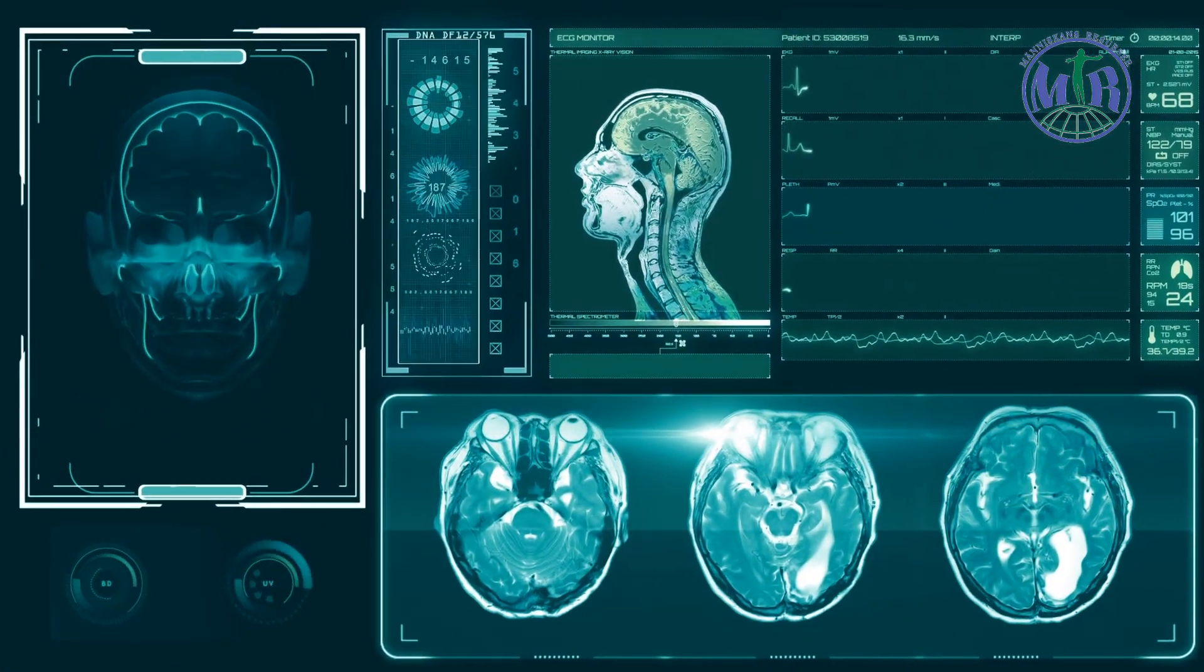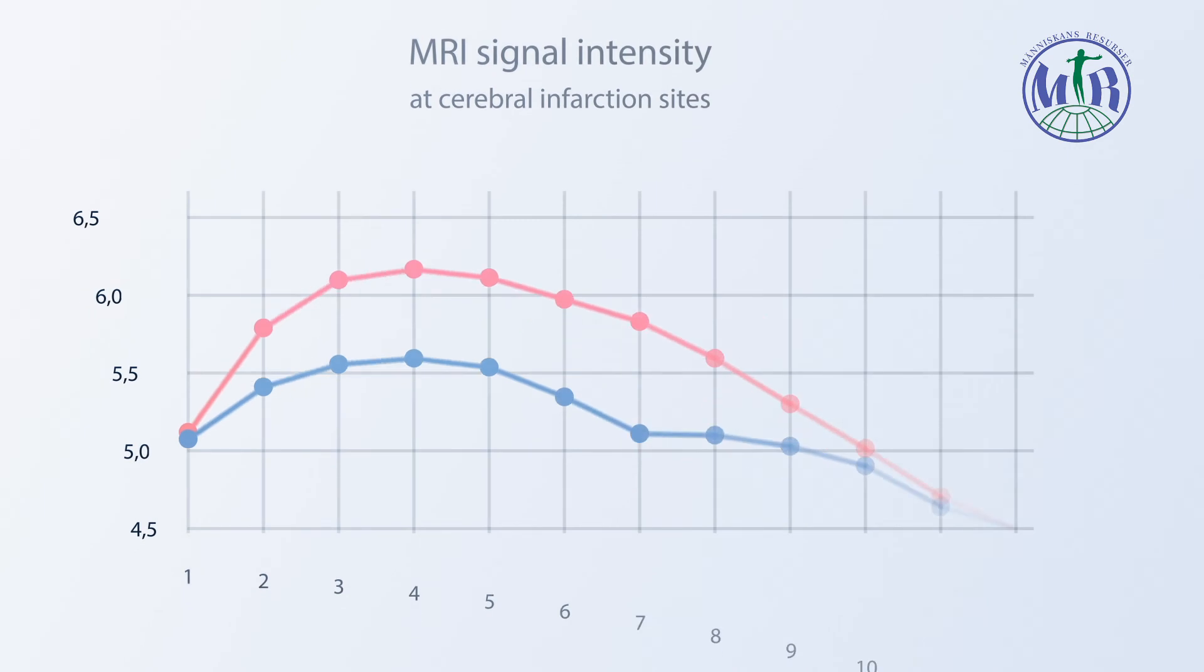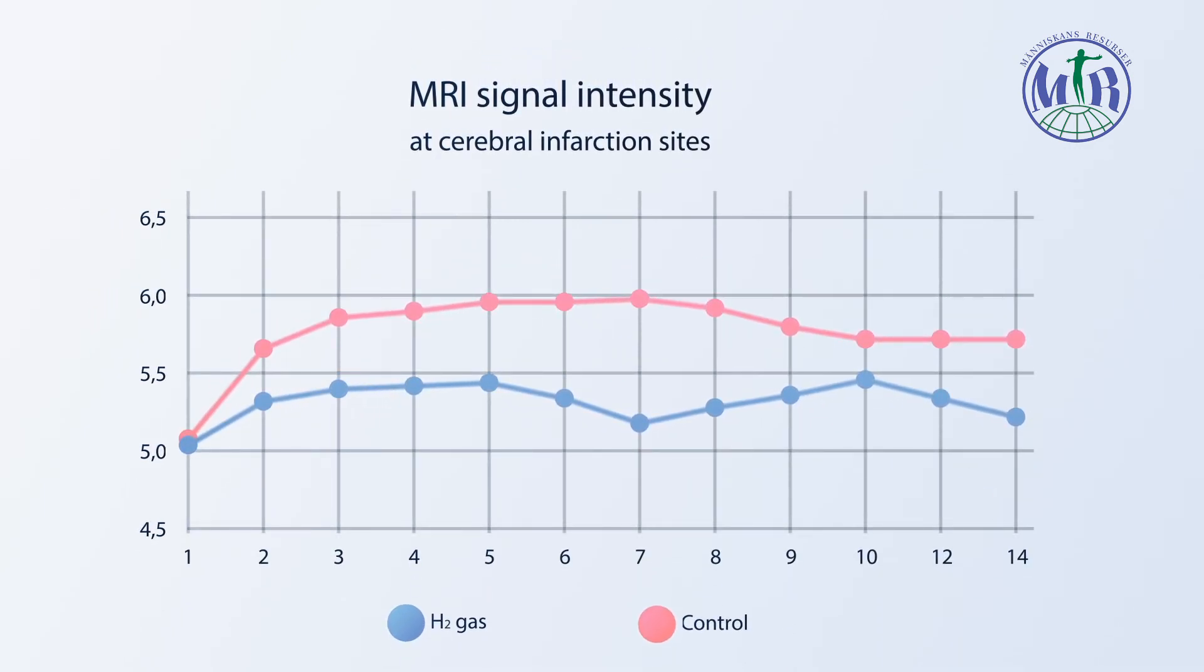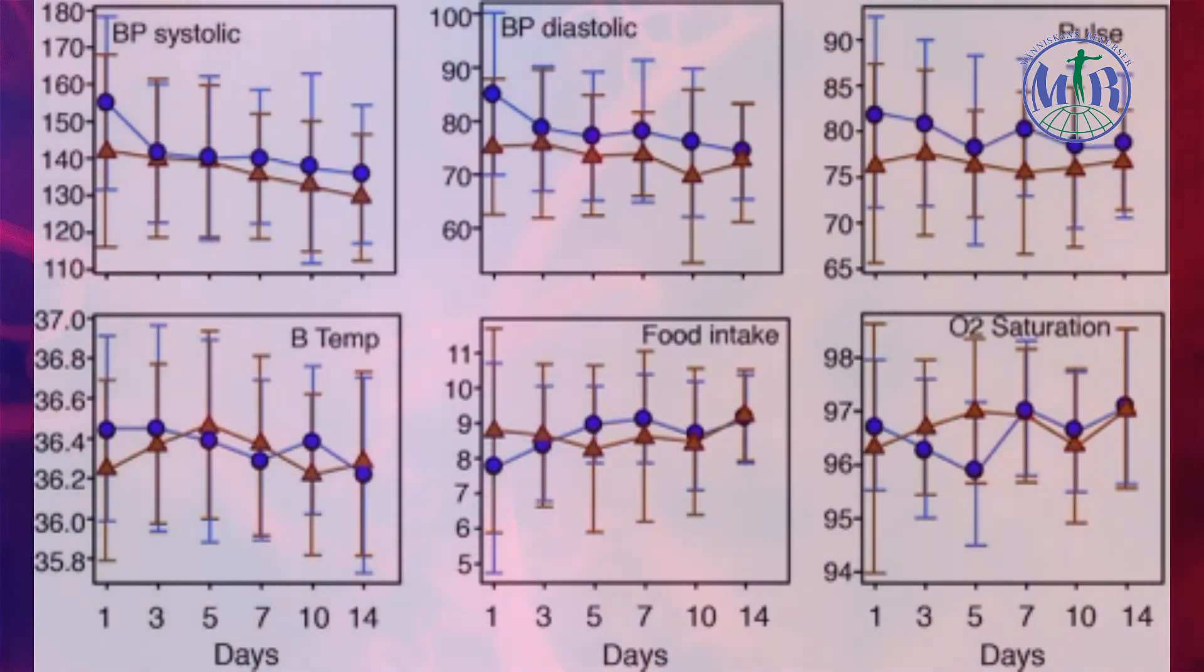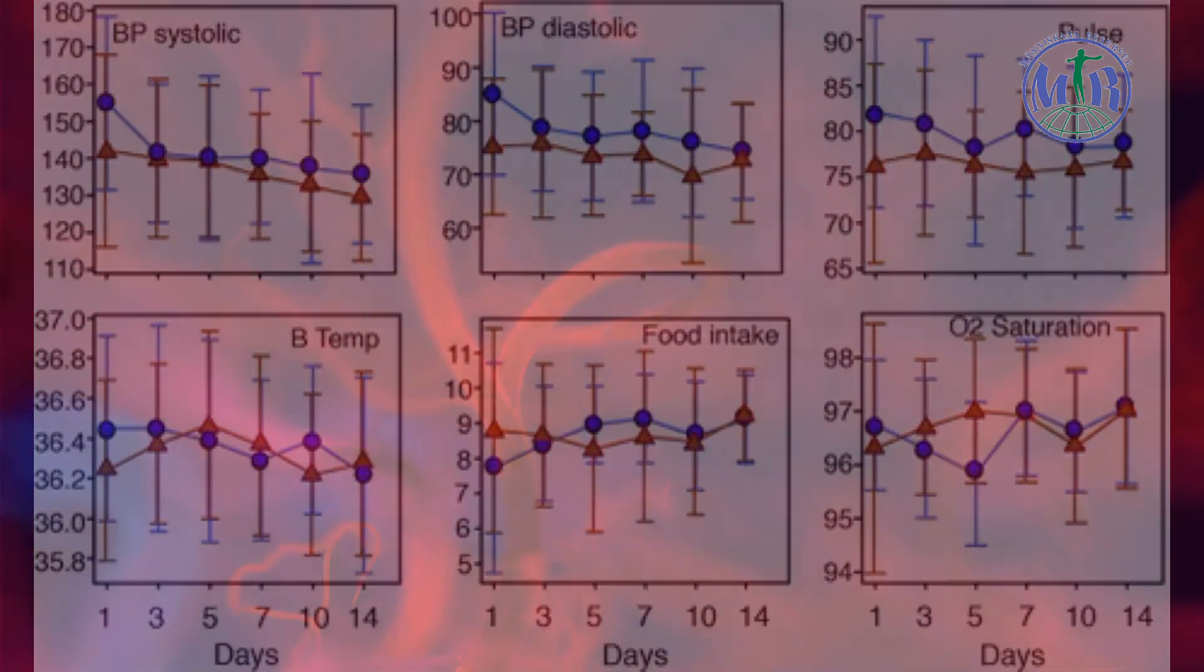In this graph, we can see the brain studies by magnetic resonance imaging. The foci of cerebral hemorrhage are significantly smaller in the group that took hydrogen compared to the control group. Also, the study found a better oxygen uptake in the group taking hydrogen.